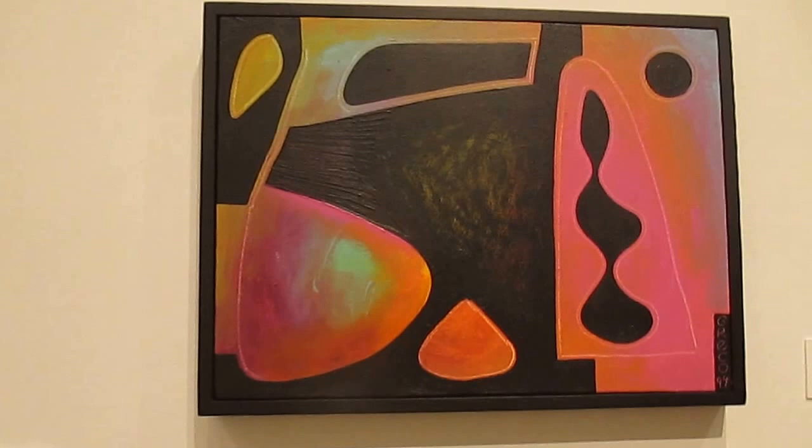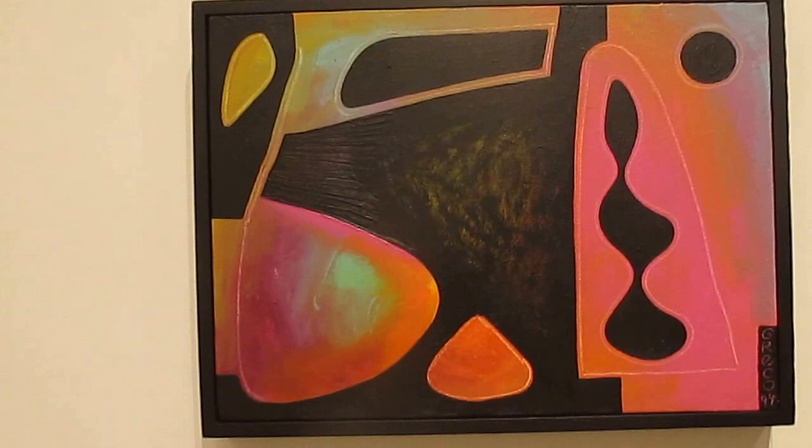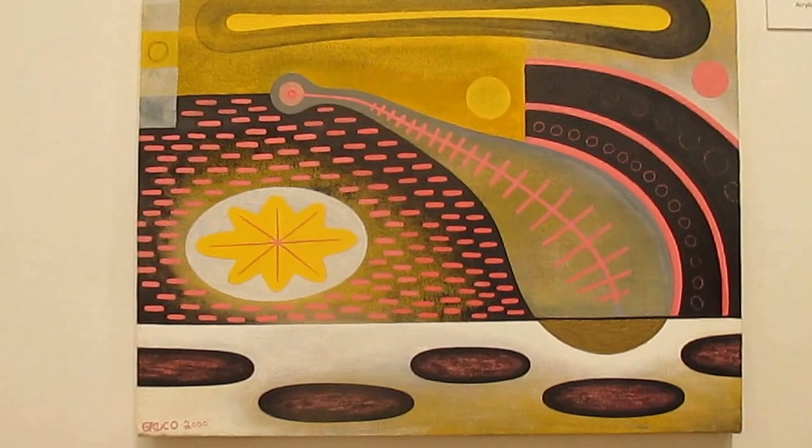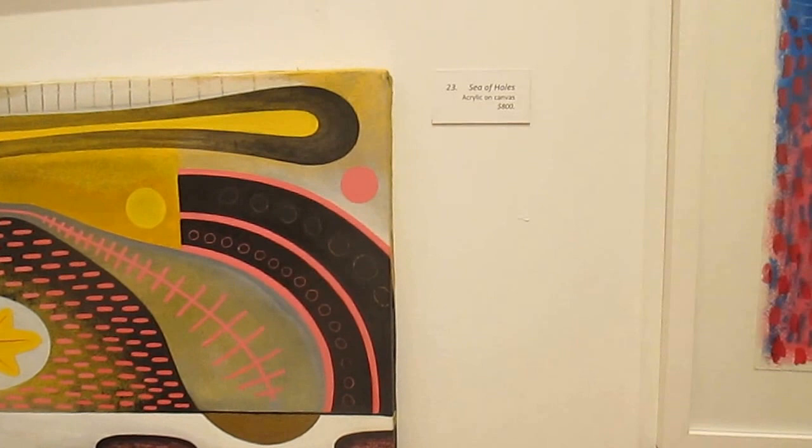This is a little painting called Pink Shapes. Acrylic on canvas. This little one is called Sea of Holes. And this is one I just finished called Blue and Pink.